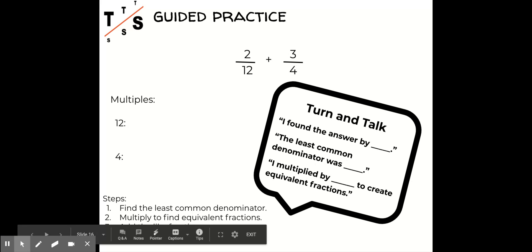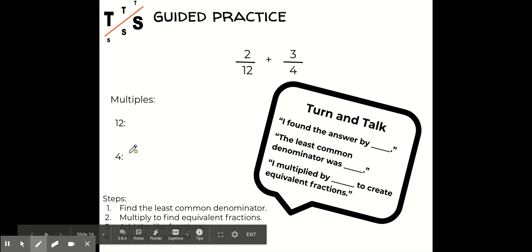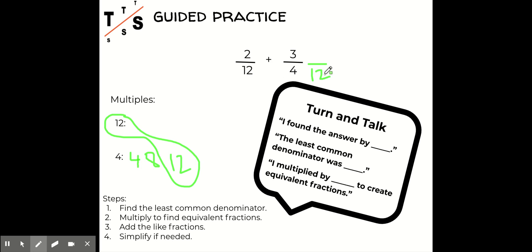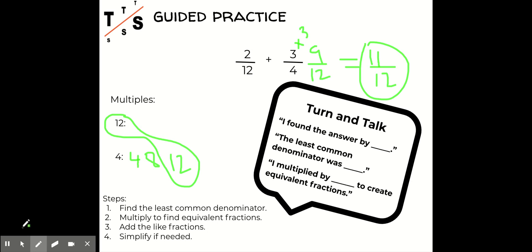Let's try one more: two twelfths plus three fourths. Because I know that twelve is a multiple of four, I'll start with four. Four, eight, twelve — and right there I've found my least common denominator. I can keep two twelfths the same. For three fourths, I change to twelfths: four times three is twelve, and whatever we do to the bottom we do to the top — three times three is nine. Now I add: two plus nine is eleven, denominator stays twelve, giving me eleven twelfths, which cannot be simplified. Go ahead and pause and turn and talk, choosing one of the sentence frames.